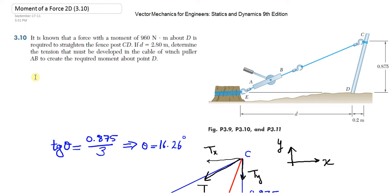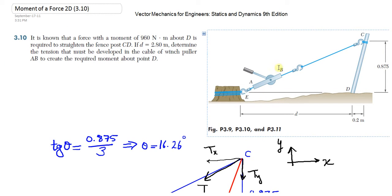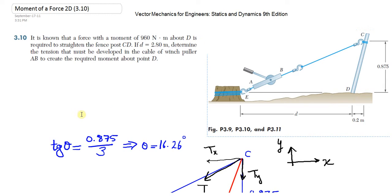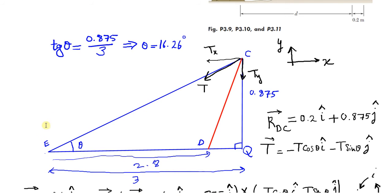I'm going to solve problem 310 using another solution. We need to find the force at EC when we have a moment of 960 Newton-meters at point D. First, I draw the triangle ECQ — that triangle is a right triangle. The angle between EC and the horizontal line I call theta, and tan(theta) equals 0.875 over the length EQ, which is 3 meters, so theta is 16.26 degrees.